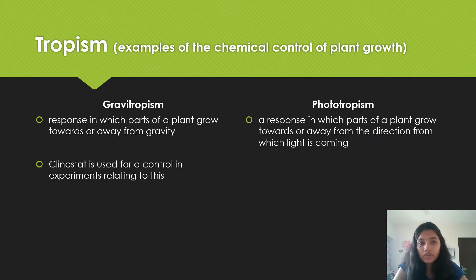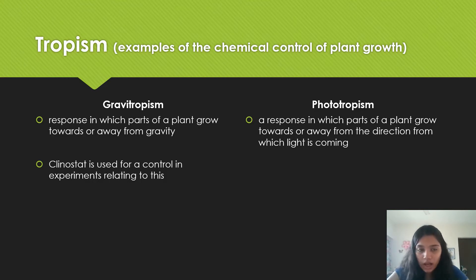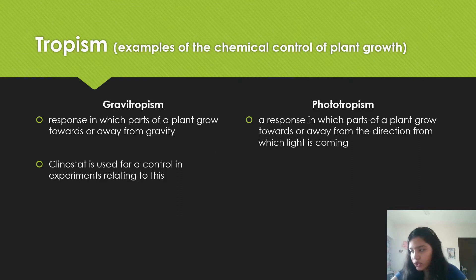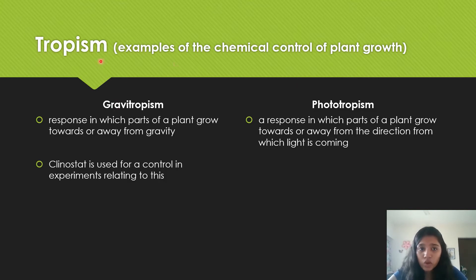Tropism refers to growth movements related to directional stimuli. Stimuli is basically a change in the internal or external environment of an organism. Directional stimuli is related to the direction of the stimuli, and we're going to deal with two aspects of tropism: gravitropism and phototropism.